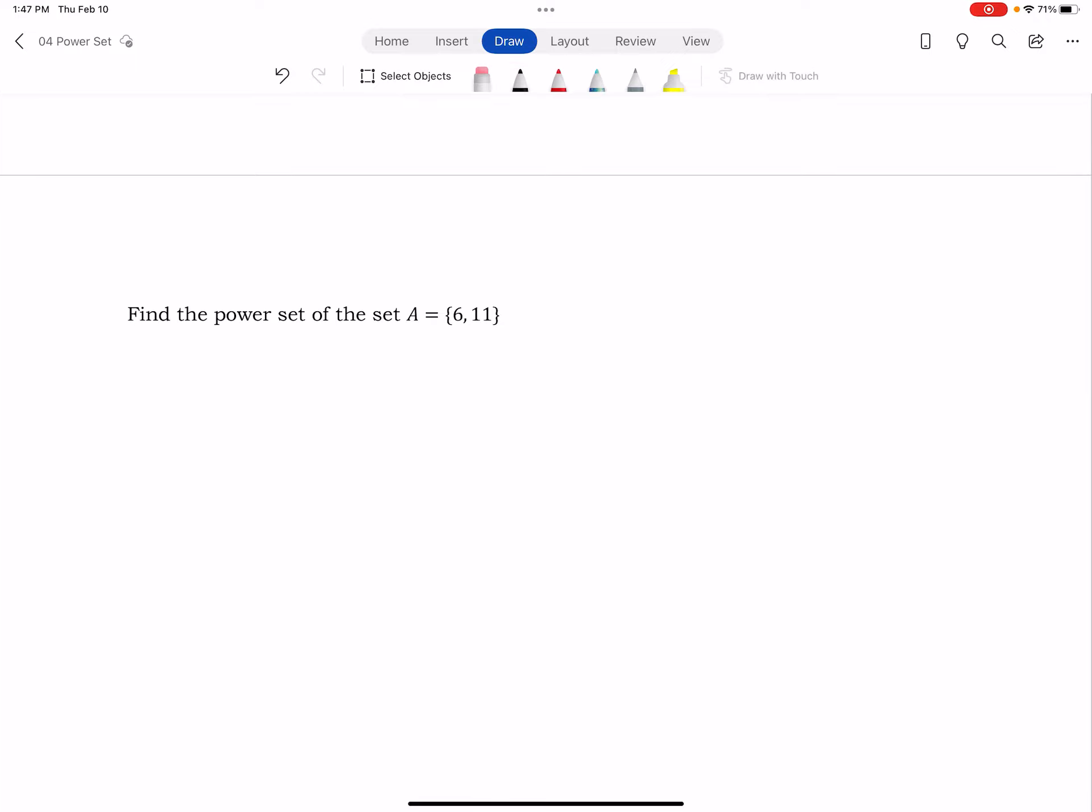So let's do an example. This one says find the power set of the set A, which has two elements in it, 6 and 11. So the cardinality of A is 2. So the cardinality of the power set is going to be 2 to the 2 or 4.